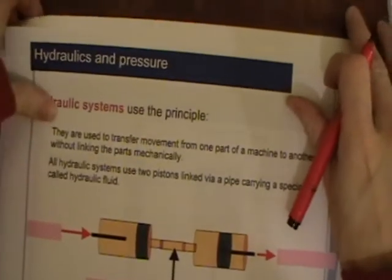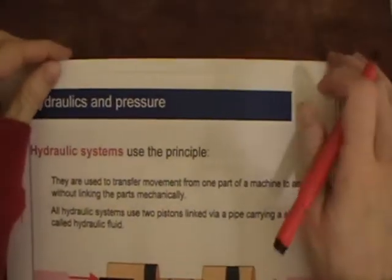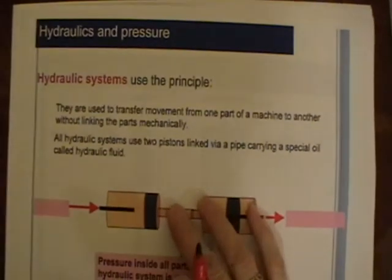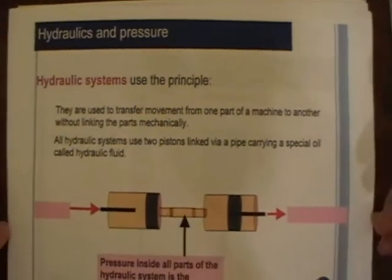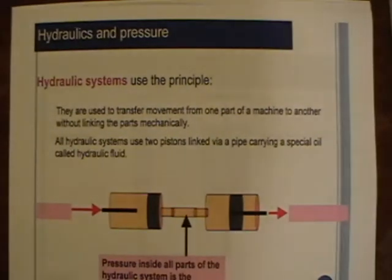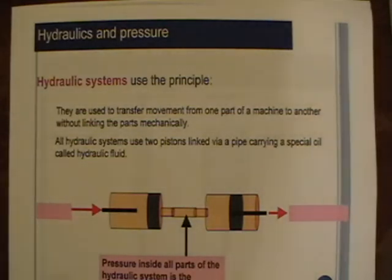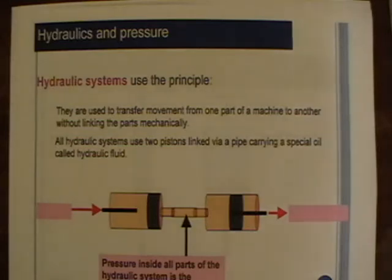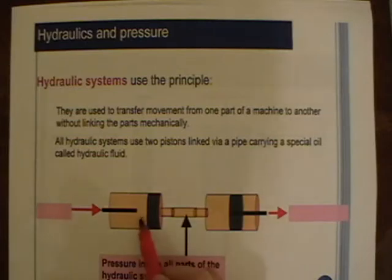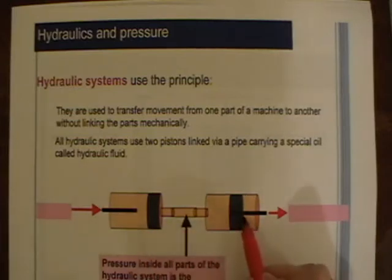We can use pressure in a system called a hydraulic system. A hydraulic system uses pistons to push a liquid from one place to another, and one piston causes the other one to move. Hydraulic systems use the principle that pressure is transmitted throughout a fluid, and are used to transfer movement from one part of a machine to another without linking the parts mechanically.